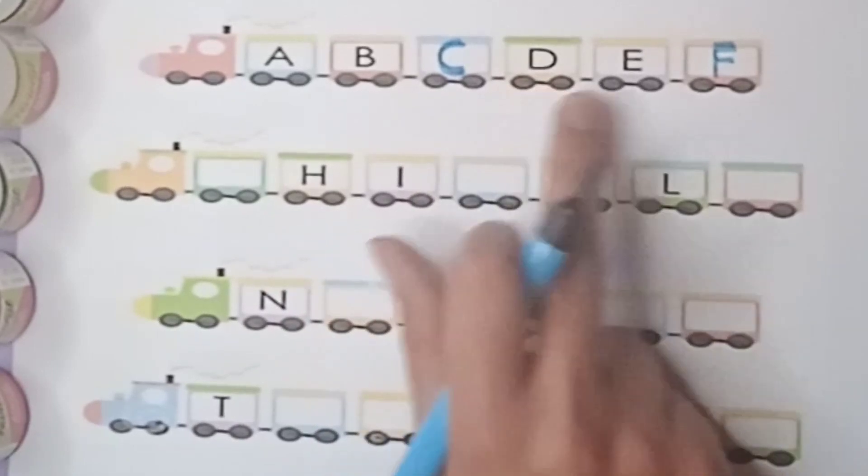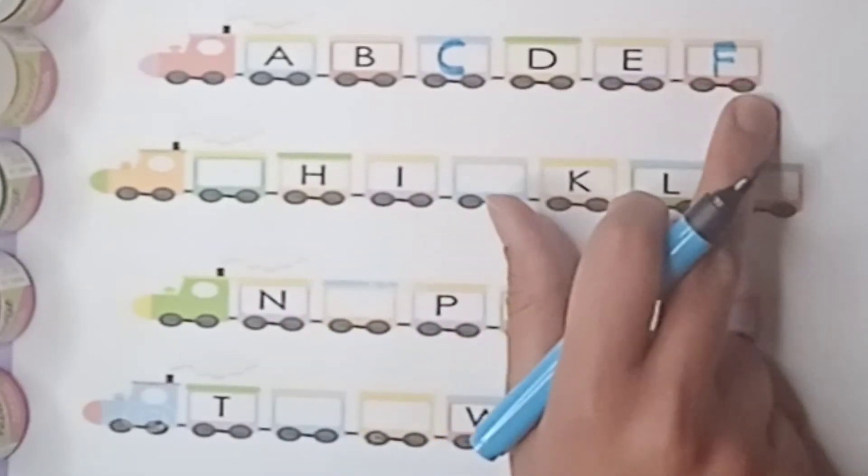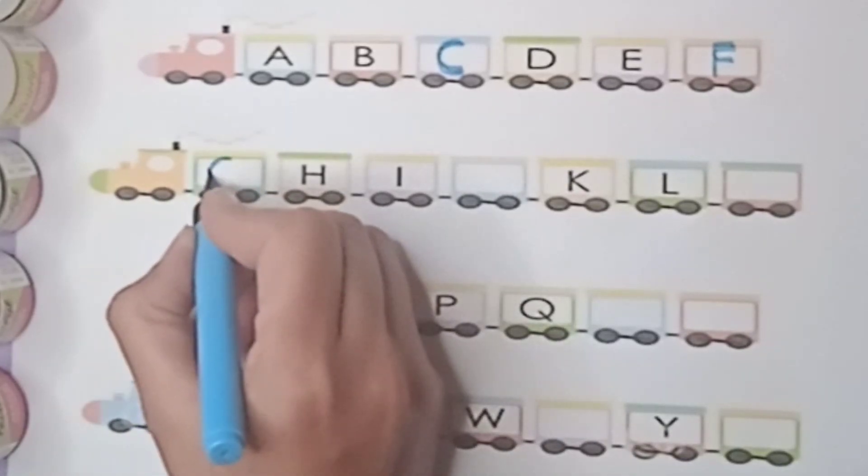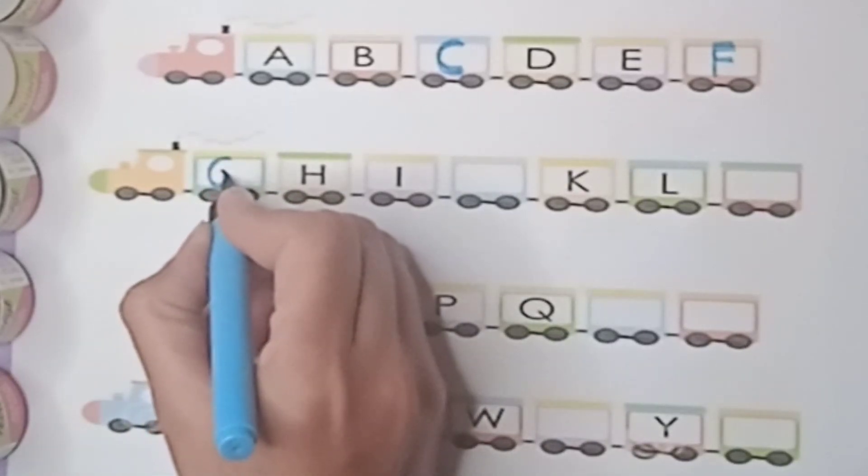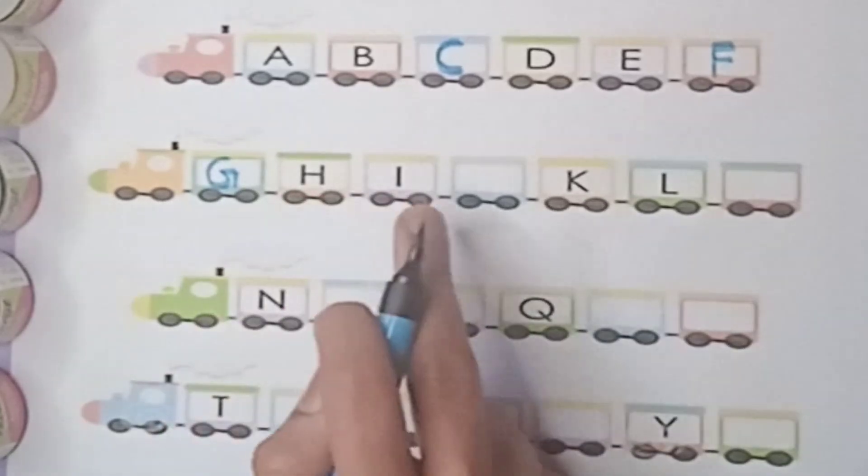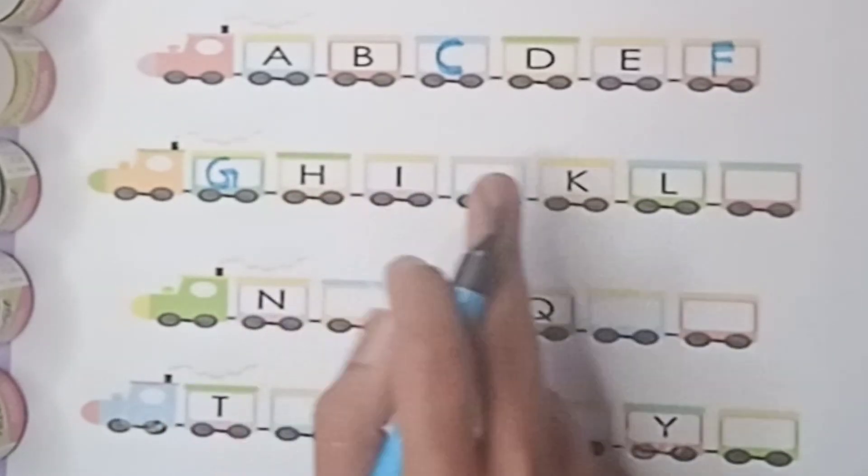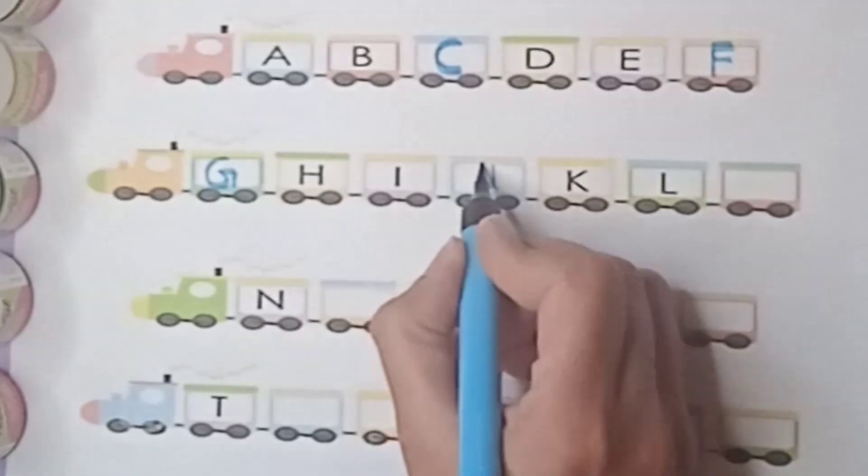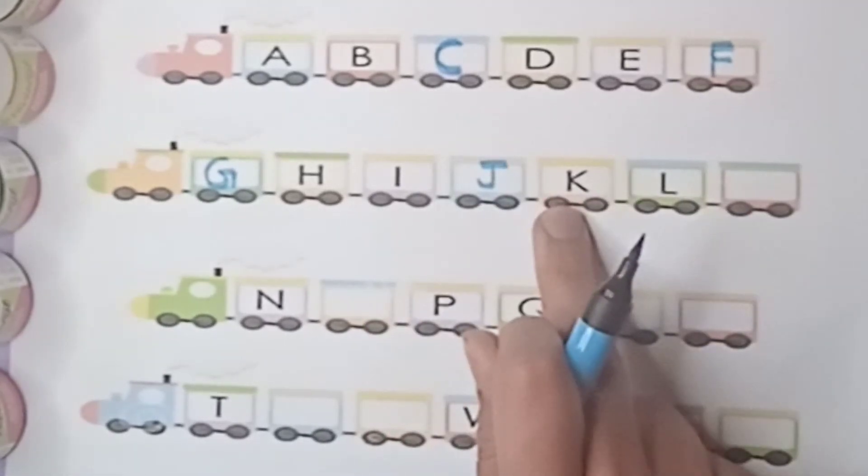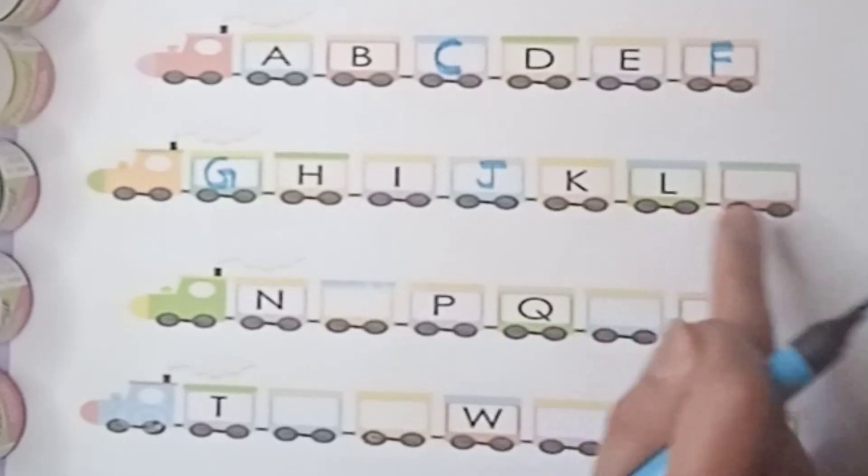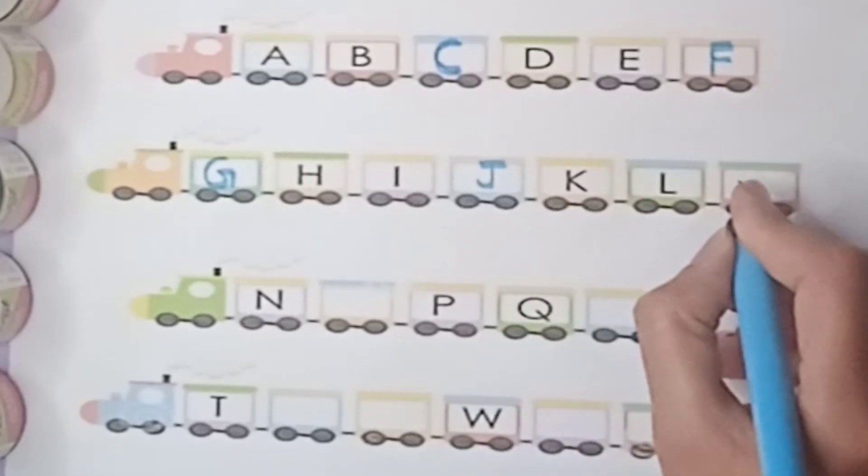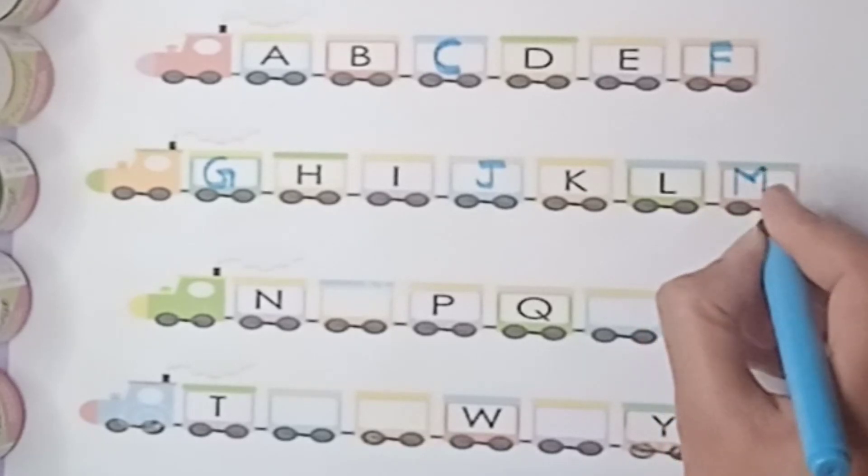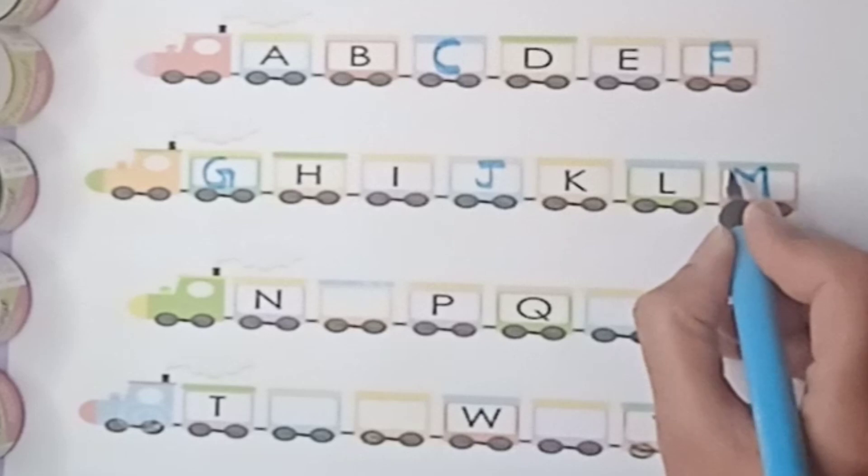A, B, C, D, E, F, G. What comes after F? G, very good. H, I, J. What comes after I? J, K, L, M. M for mango.